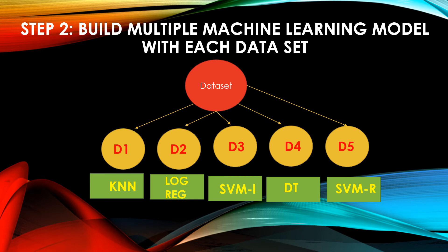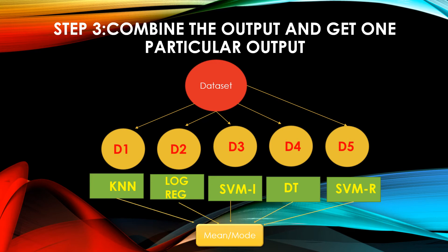Now let's look at the third step. Third step says that combine the output and get one particular output. So now we have found the output from KNN. We have found the output from logistic regression. We have found the output from SVM linear kernel. We have found the output from decision tree. We have found the output from SVM RBF kernel.